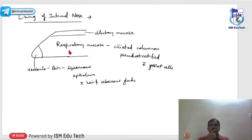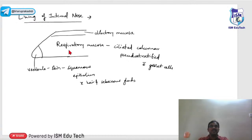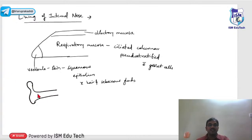The anterior vestibular part of the nasal cavity is lined by squamous epithelium continuous with the outer skin, with hair and sebaceous glands (pilosebaceous units). Infection of this area is vestibulitis, most commonly caused by Staphylococcus aureus, requiring anti-staphylococcal antibiotics — similar to furunculosis in the external auditory canal.